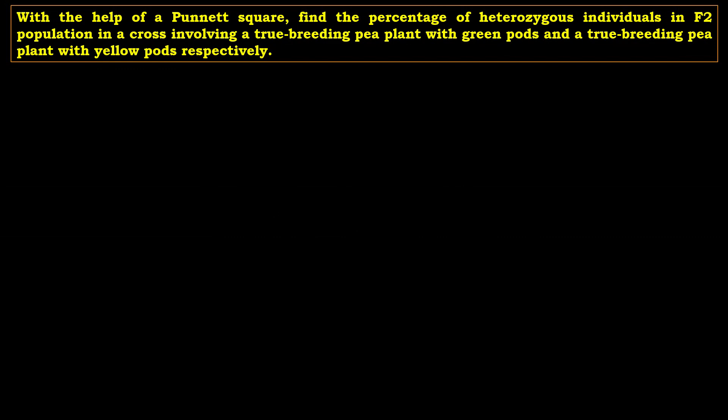The next question is: with the help of a Punnett square, find the percentage of heterozygous individuals in the F2 population in a cross involving a true-breeding pea plant with green pods and a true-breeding pea plant with yellow pods respectively. Both plants are true breeding, meaning they are in a homozygous condition, and we have to find the percentage of heterozygous individuals in the F2 population.